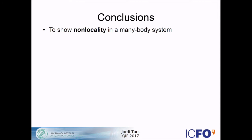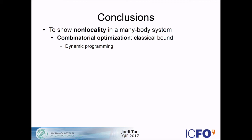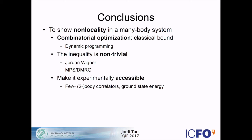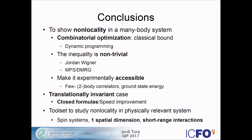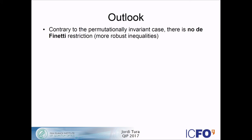In conclusion, to show non-locality in a many-body system you have to solve three things at once. First, a combinatorial optimization done here with dynamic programming. Second, you have to show the inequality is non-trivial — that quantum correlations violate it — which can be done analytically when possible or with tensor networks. And third, it would be nice to make it experimentally accessible; the inequalities here contain only few-body correlators or require access to the ground state energy. If you have symmetries, everything is nicer. This is a toolset to study non-locality in physically relevant systems like spin glass systems, as long as you have one spatial dimension and short-range interactions.